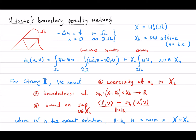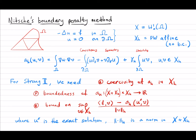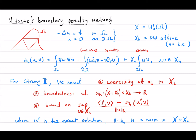The model problem is just the Poisson equation with homogeneous Dirichlet data, and so the energy space is H^1_0. We are thinking of a domain with curved boundary, so some of the triangles that are close to the boundary will have curved edges, and we just want to use piecewise polynomials.